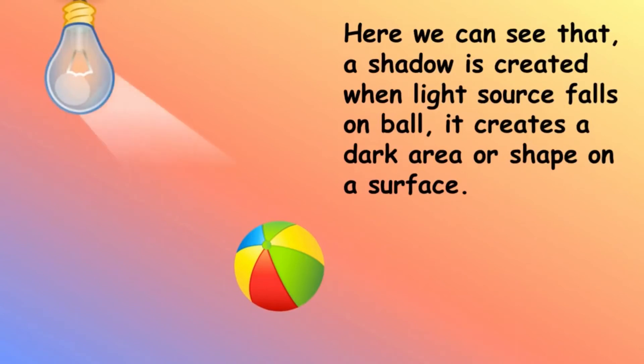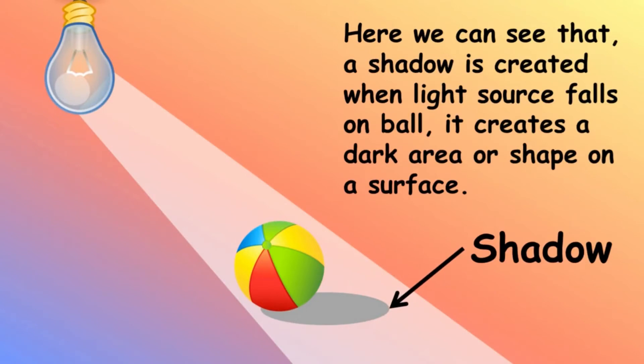Here we can see that a shadow is created when light source falls on a ball. It creates a dark area or surface, the shadow.